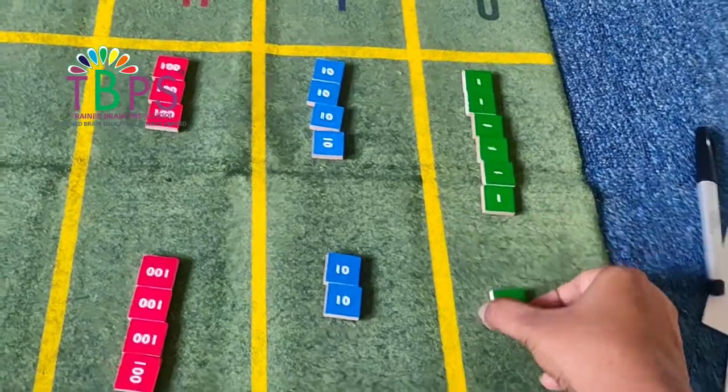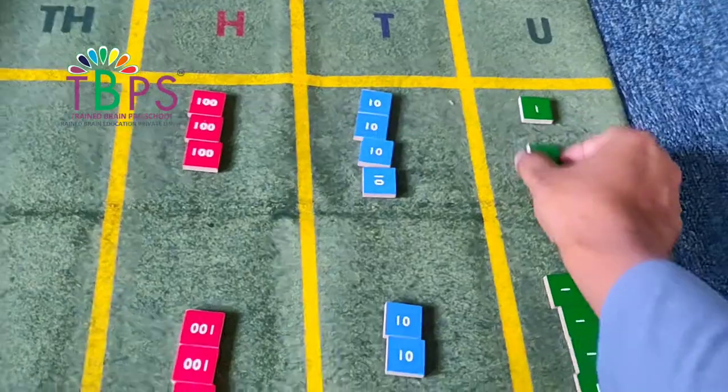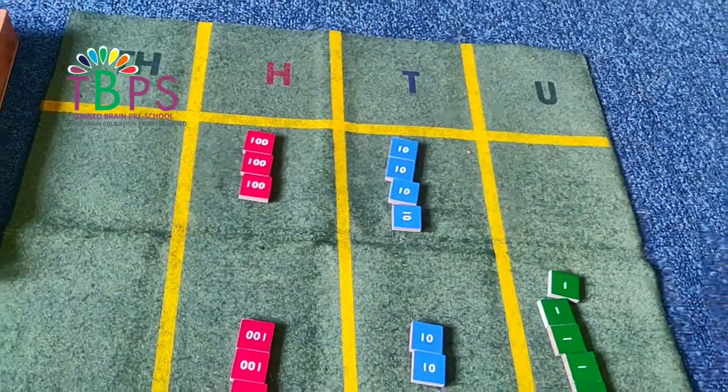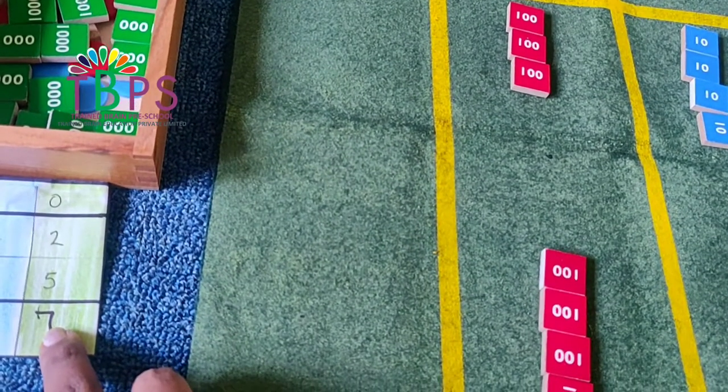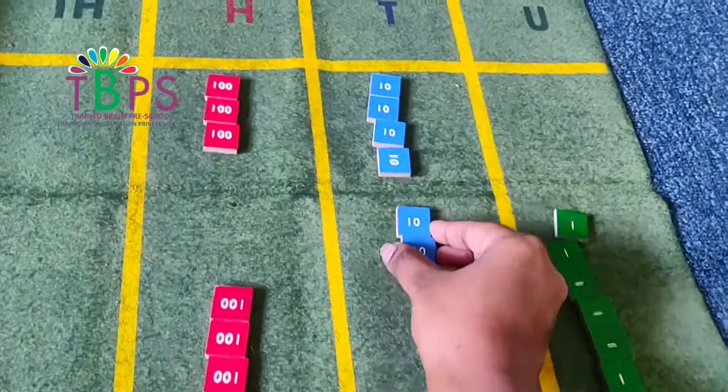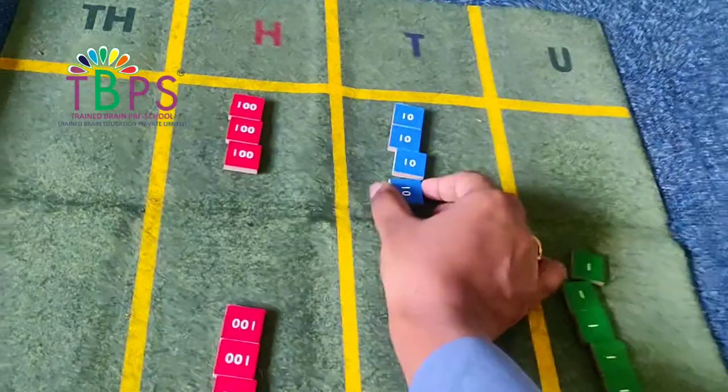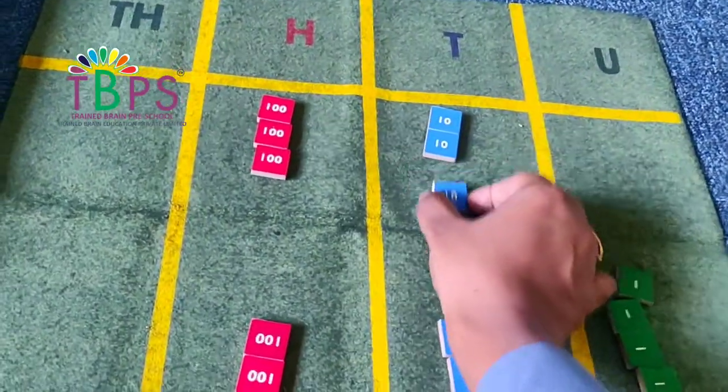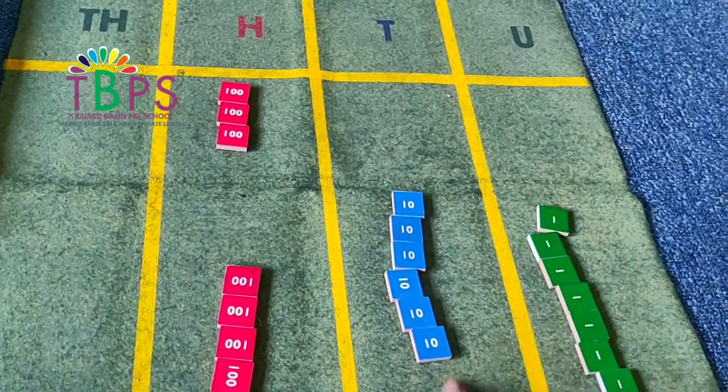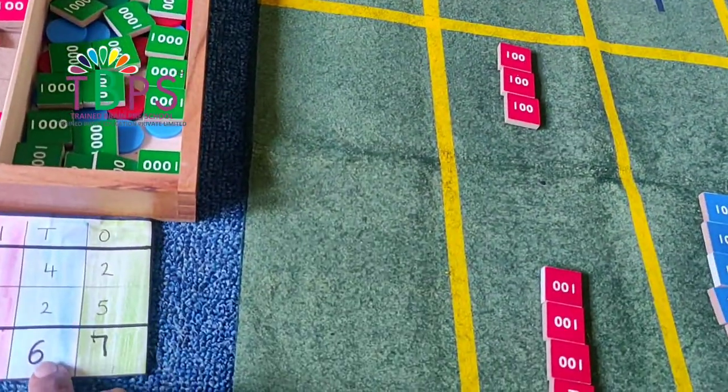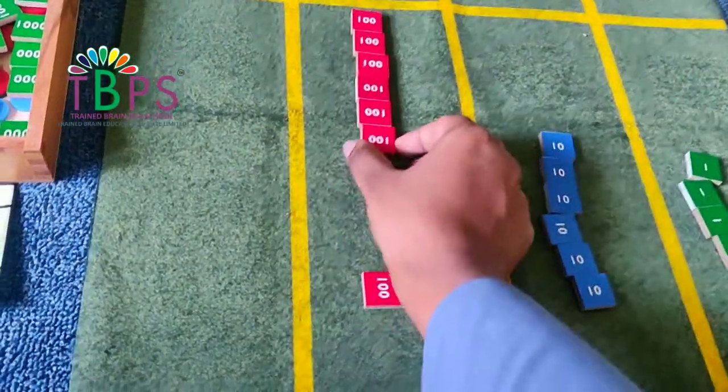Now let's do addition. Let's quickly combine the units and start counting: one, two, three, four, five, six, seven. So you can take your pen and write down that we have seven ones. Now let's count the tens. Let me join the tens: one ten, two tens, three tens, four tens, five tens, six tens. We have six tens, so I'm going to write six tens.